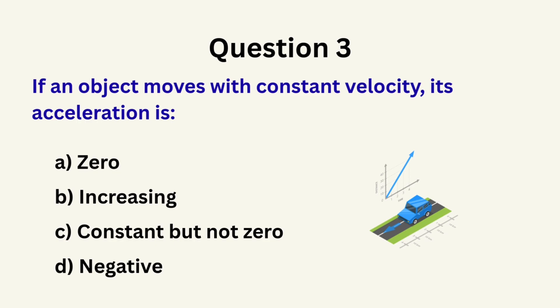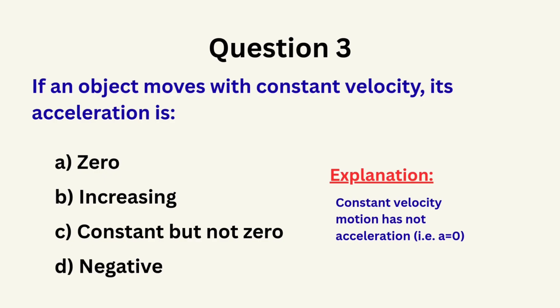Question 3: If an object moves with constant velocity, its acceleration is... A. 0, B. Increasing, C. Constant but not 0, D. Negative. The correct answer is A: 0.